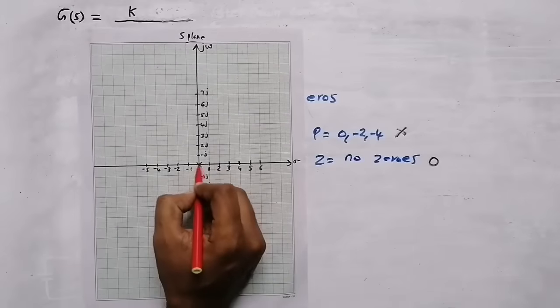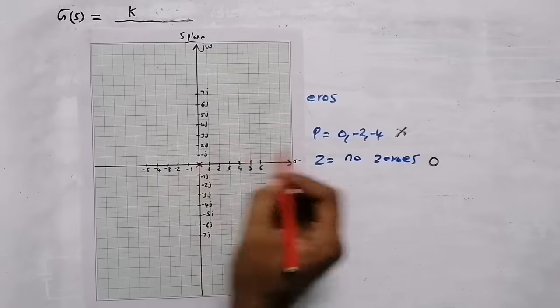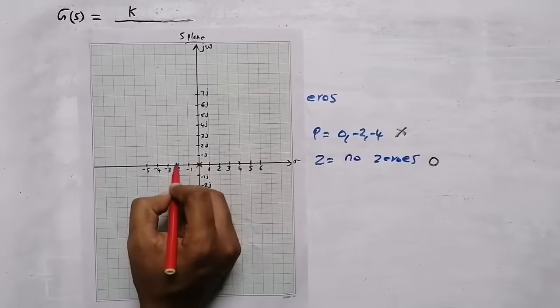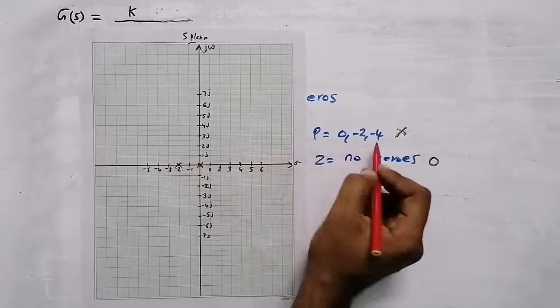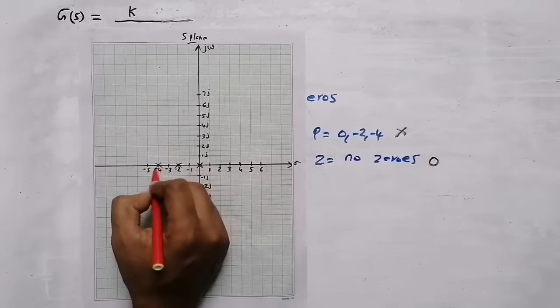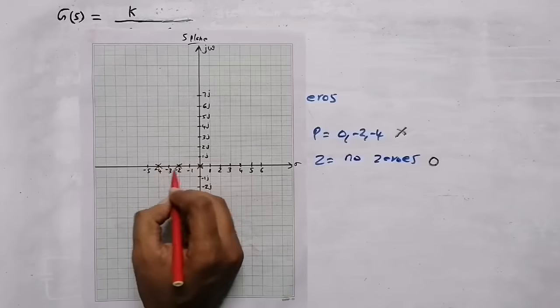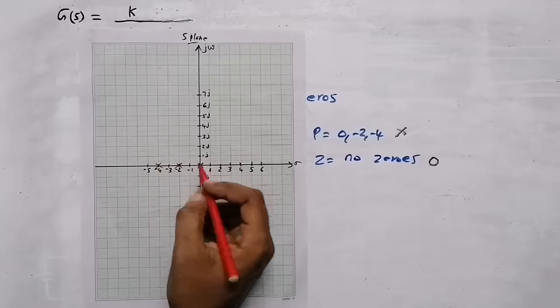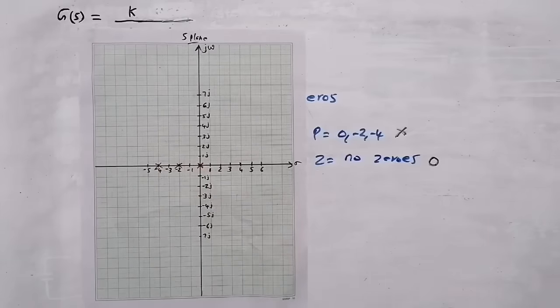At zero there is one pole, at minus two there is a pole, and at minus four there is also a pole. So these are the three poles. In this case there are no zeros.